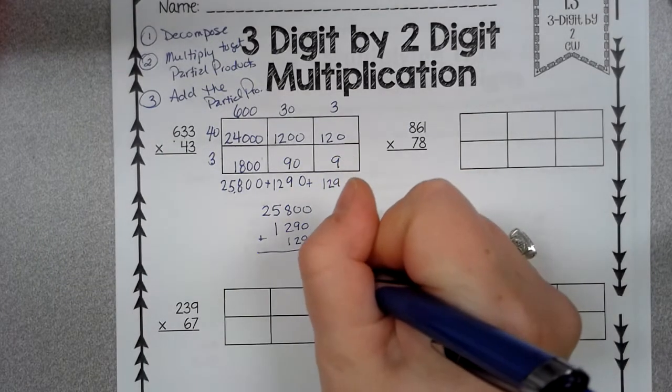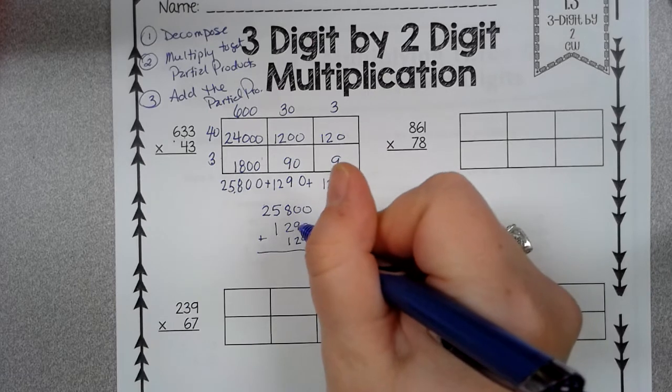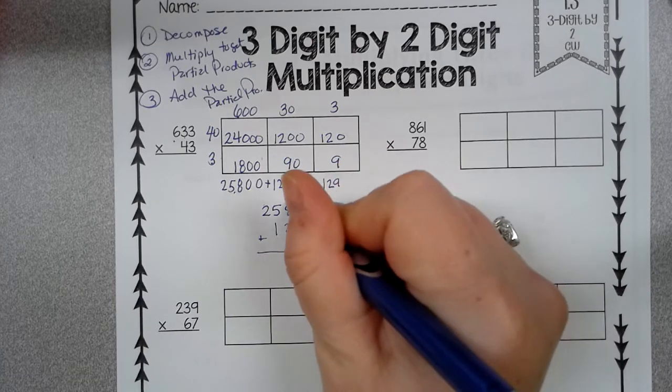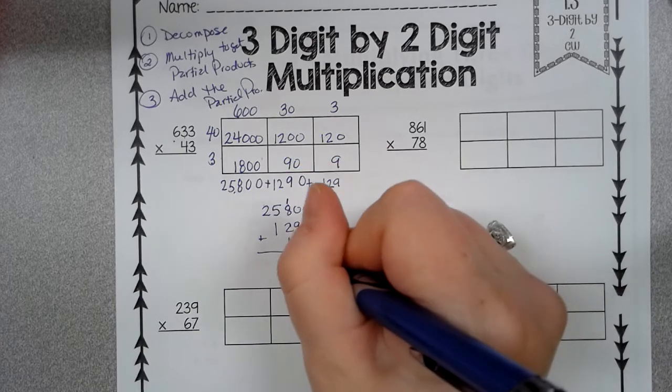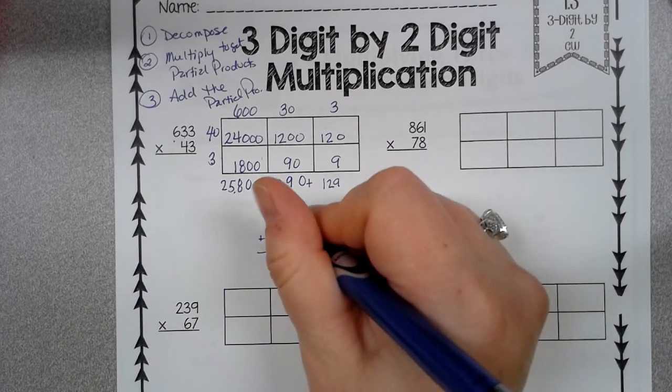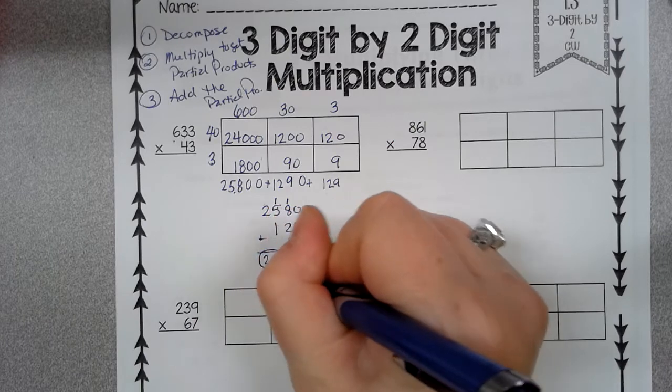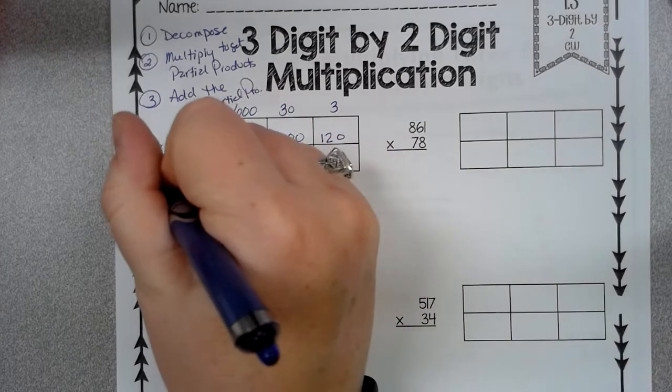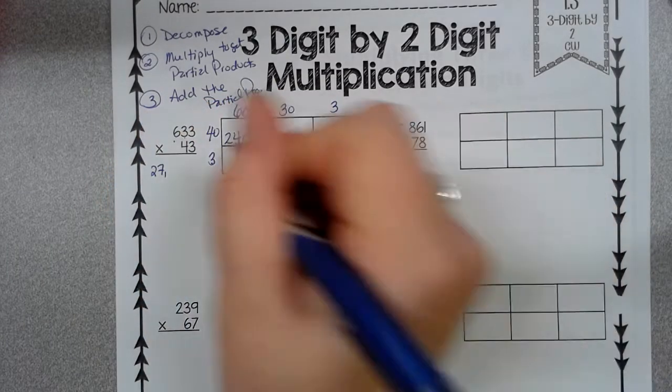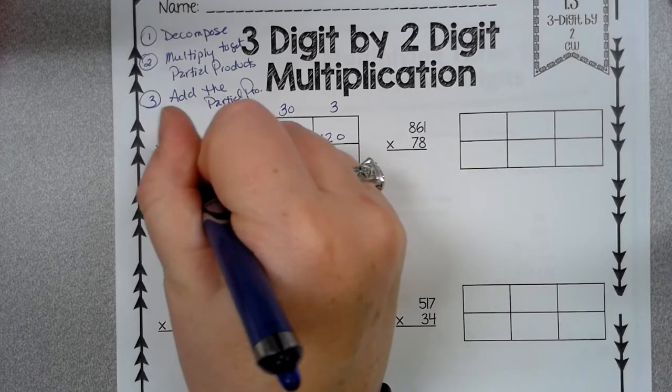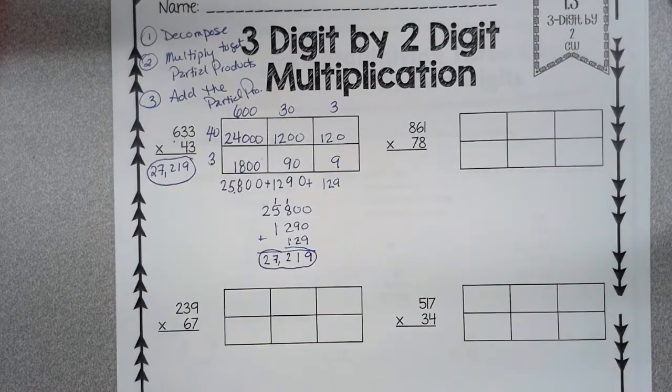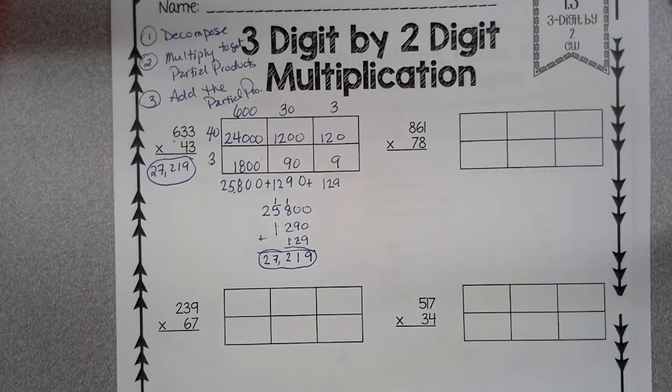0, 0, 9 is 9. 0, 0, 9, 2 is 11. That's 10, 11, 12. 5, 6, 7, 2. So the answer is 27,219.